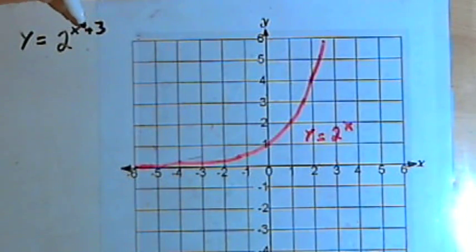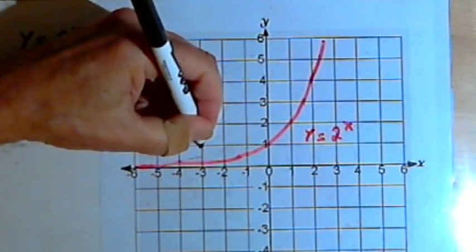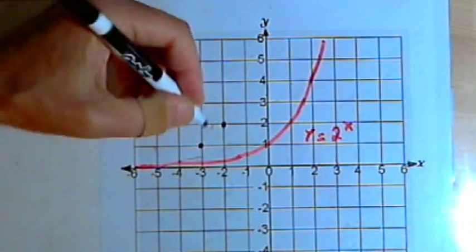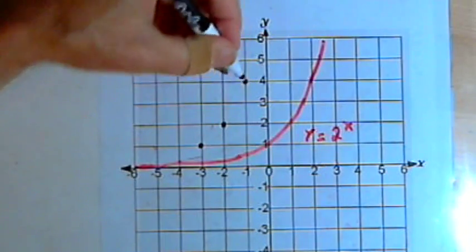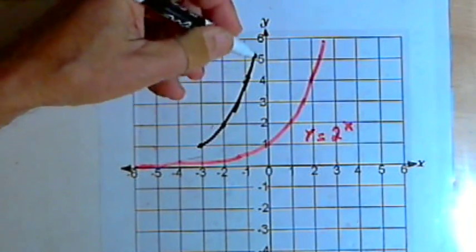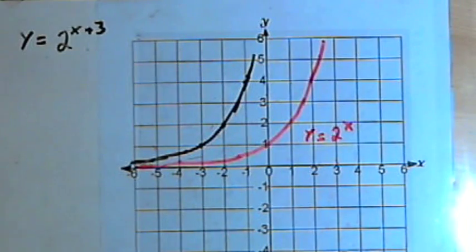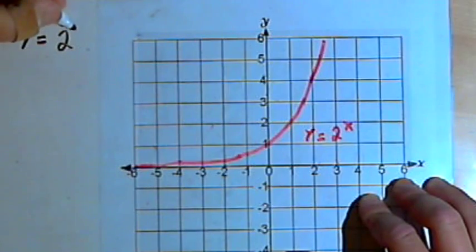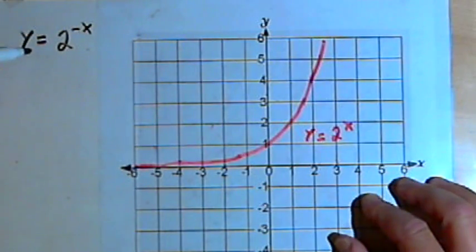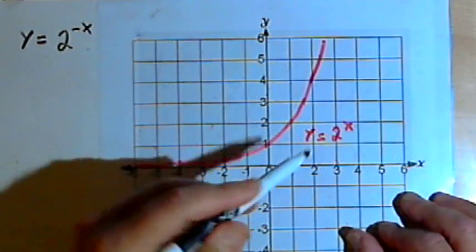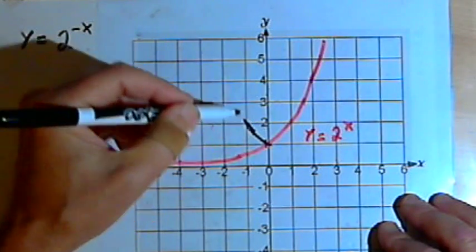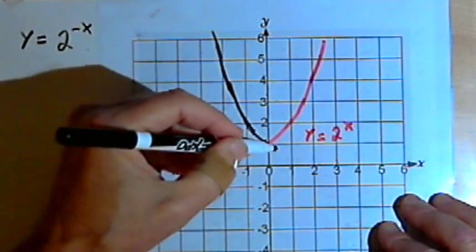In this case, I'm shifting the graph to the left by 3 units. The horizontal asymptote is unchanged, so the graph will shift over. If I change the sign of the exponent — if I make this 2 to the negative x — what that's going to do is flip the graph across the y-axis, reflecting it horizontally.